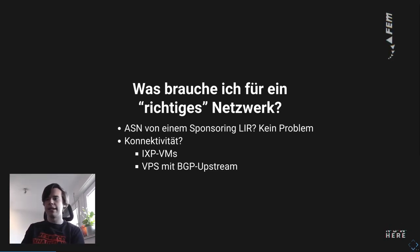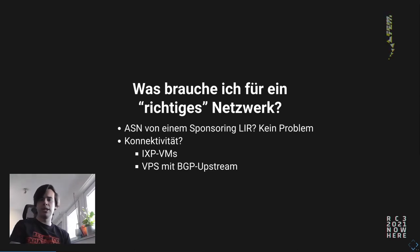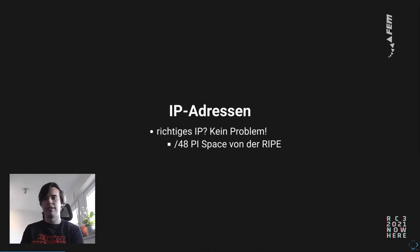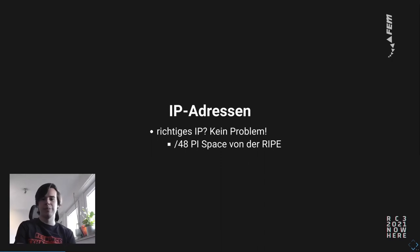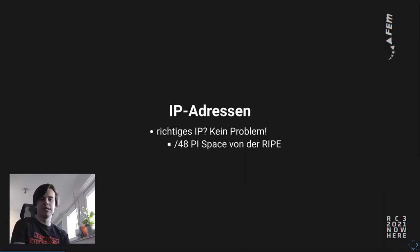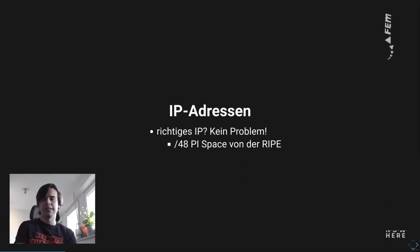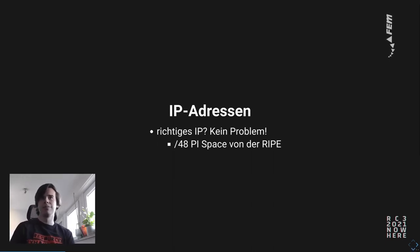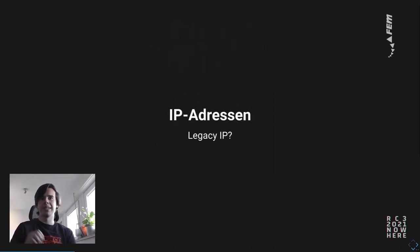What do I need for a real network? I will need an autonomous system — if I become a RIPE member I can get that. I might need connectivity, and somewhere I need to get IP addresses and bring them to the internet. There are virtual machines with IXP connections and virtual machines with BGP upstream, so that's all possible. I also need IP addresses. For real IP that's not a problem — there are lots of them. RIPE will give you a /48 PI network connected to your organization but not tied to a provider.